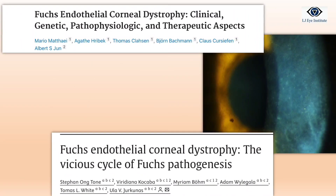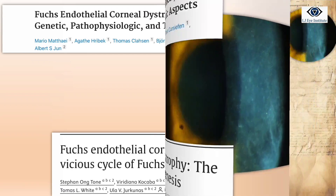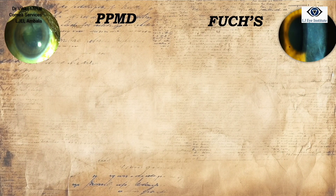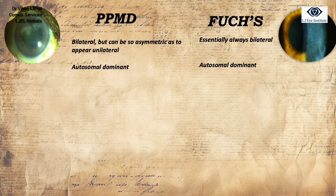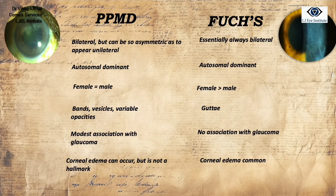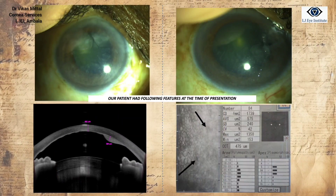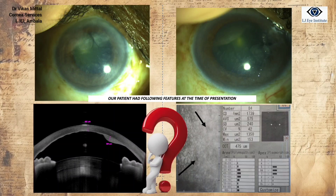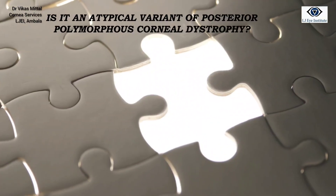Whereas in Fuchs endothelial dystrophy, the endothelial layer becomes dysfunctional due to accumulation of extracellular matrix material that collects in guttae. Both conditions are bilateral. Corneal edema can occur in PPMD but it is not a hallmark, whereas corneal edema is common in Fuchs. Being two entirely different entities, our patient had features of both at presentation, making us wonder if our case is an atypical variant of PPMD.